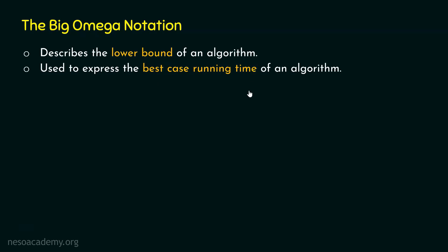This means an algorithm cannot grow lesser than a specific time. For example, if an algorithm takes omega of n² time, this means the best case running time of that algorithm is n², so it cannot perform better than n². On the other hand, in case of big O notation, it is used to express the worst case running time of an algorithm, because it describes the upper bound — meaning an algorithm cannot perform worse than a specific time, such as n².